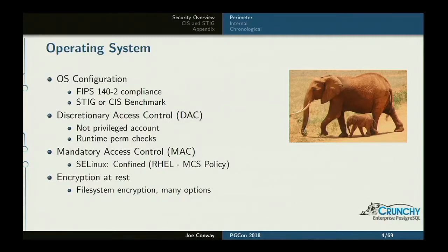This talk is oriented around Linux, and specifically the STIG and CIS benchmark are both written assuming RHEL. But most of what I'll talk about is applicable to other Linux distributions and other systems in general. In terms of OS configuration, first you should ensure the OS is configured for FIPS compliance — a somewhat US-centric requirement — which ensures you only use certain ciphers deemed to be safe. Your OS can also be locked down with either a STIG or a CIS benchmark applicable to the OS itself. If your OS is not secure, your database can hardly be secure.